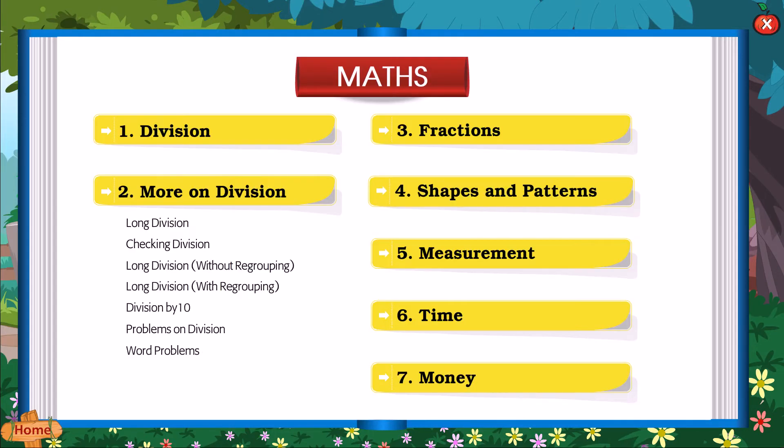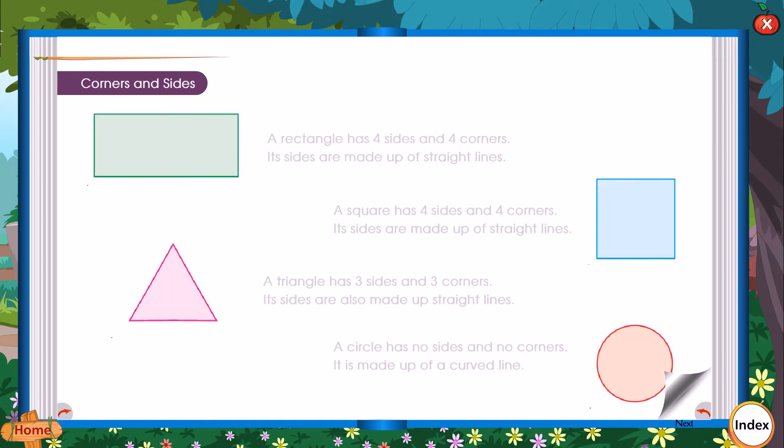Maths 4: Shapes and Patterns. Corners and Sides. A rectangle has 4 sides and 4 corners. Its sides are made up of straight lines. A square has 4 sides and 4 corners. Its sides are made up of straight lines.